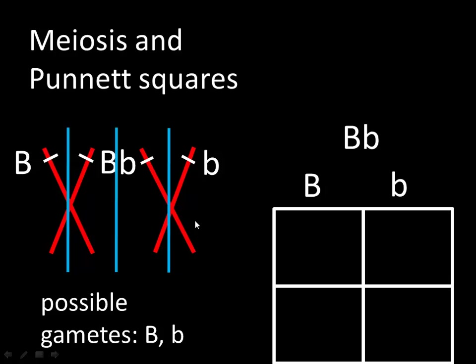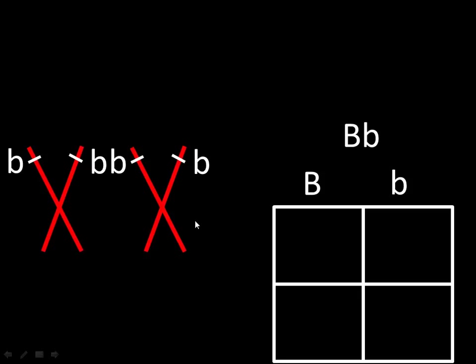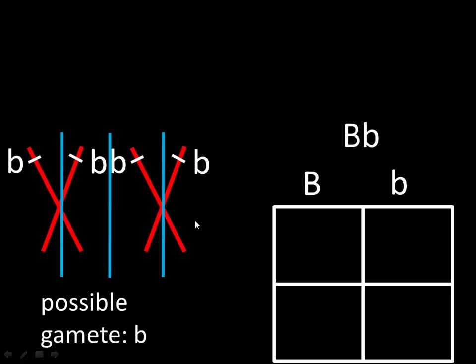Remember that sexual reproduction involves two parents, so let's think about the other parent. Let's say this other parent is homozygous recessive for this gene. 'Homo' means the same, so their genotype has the same recessive lowercase allele on both chromosomes of the pair. Going through meiosis — interphase, copying, splitting homologous pairs in meiosis I and sister chromatids in meiosis II — the only gamete they can make is one containing the recessive allele.